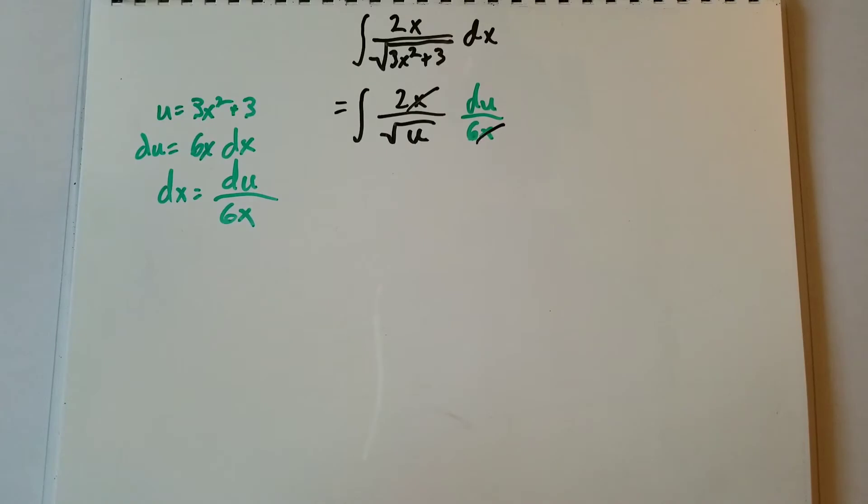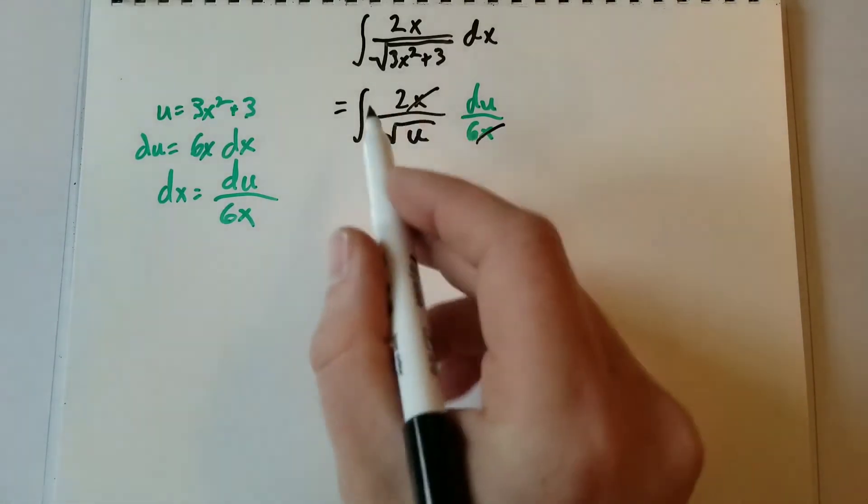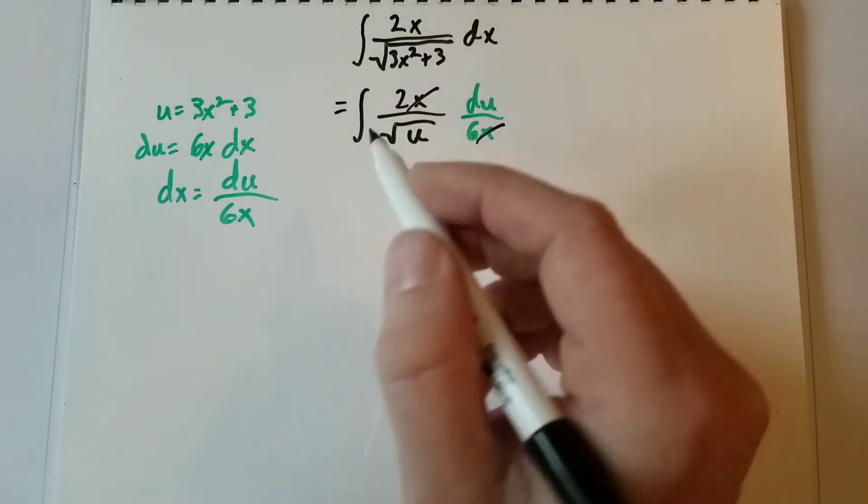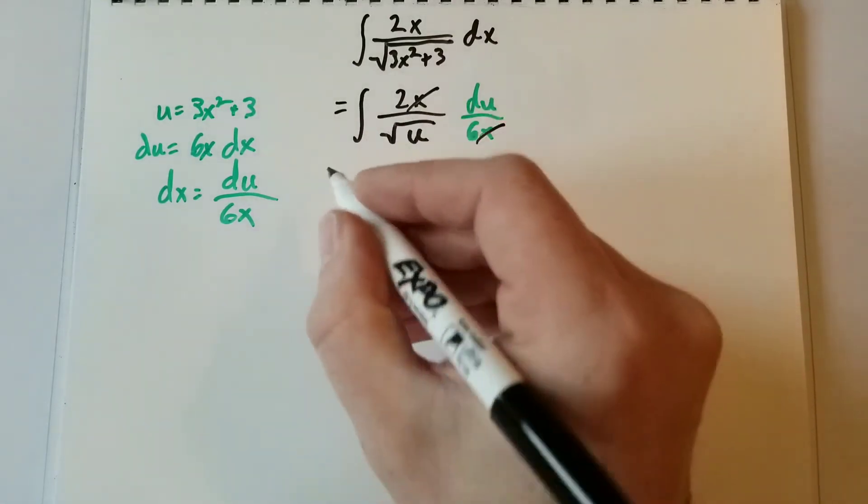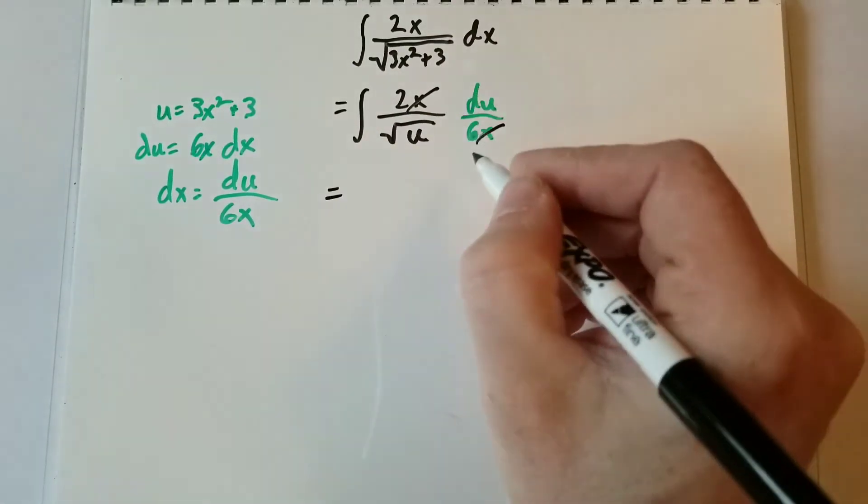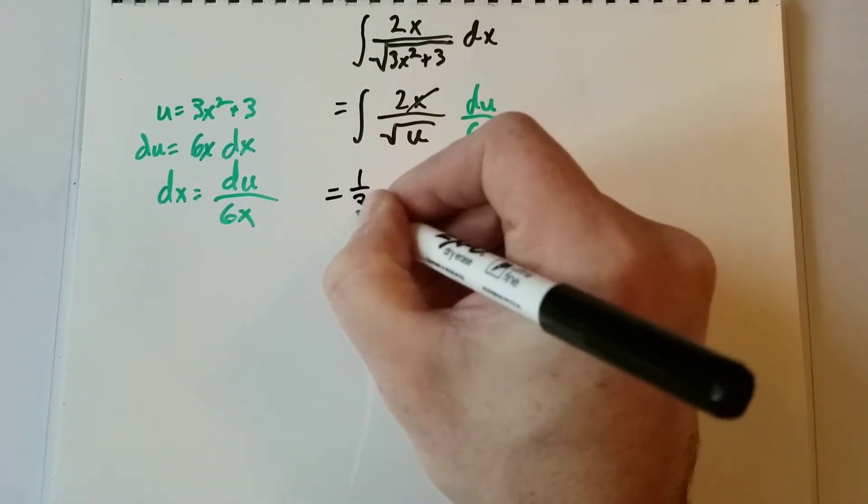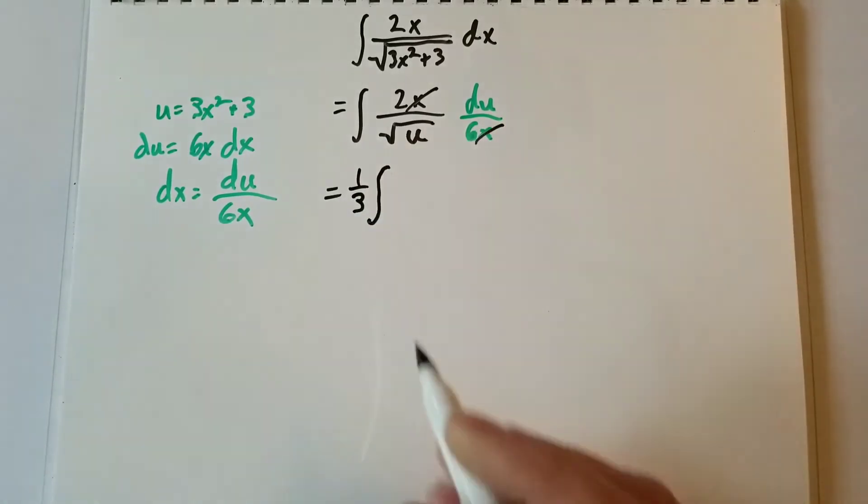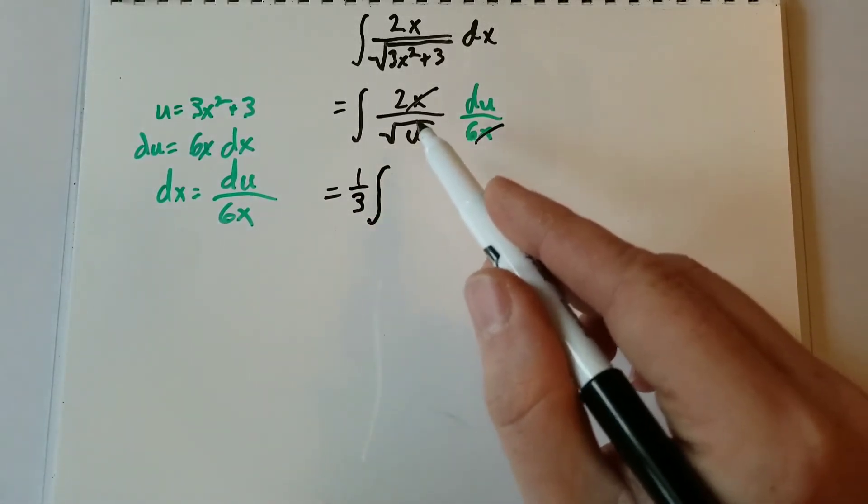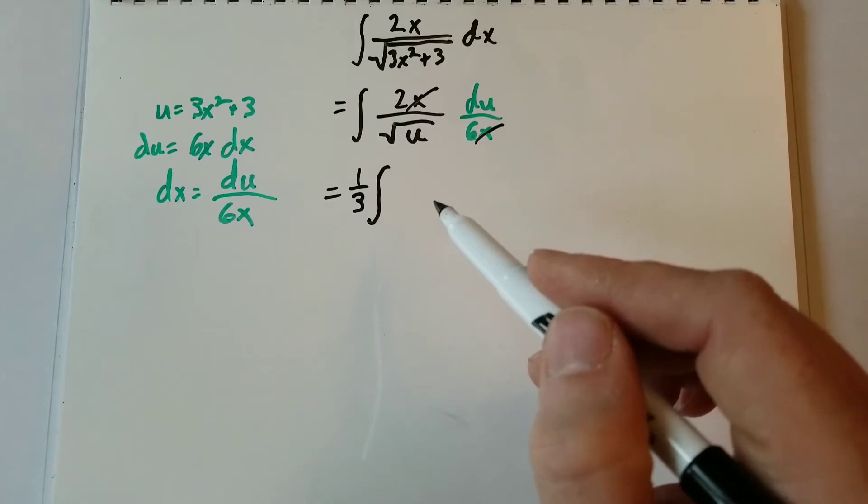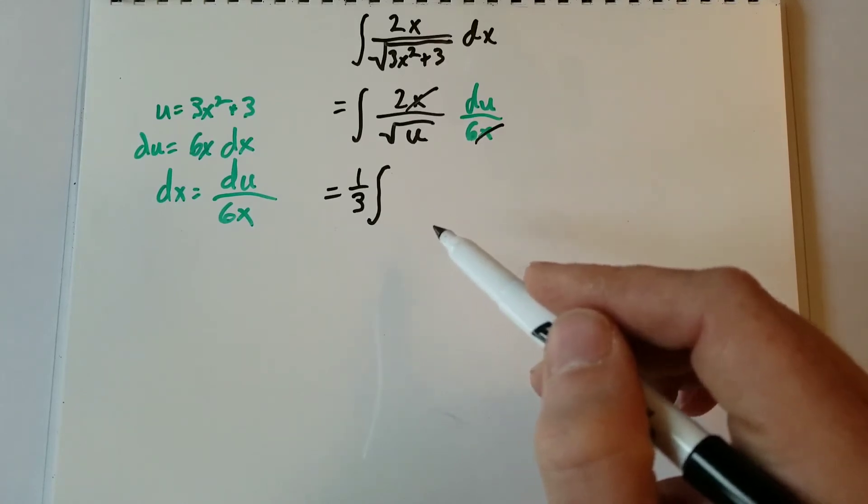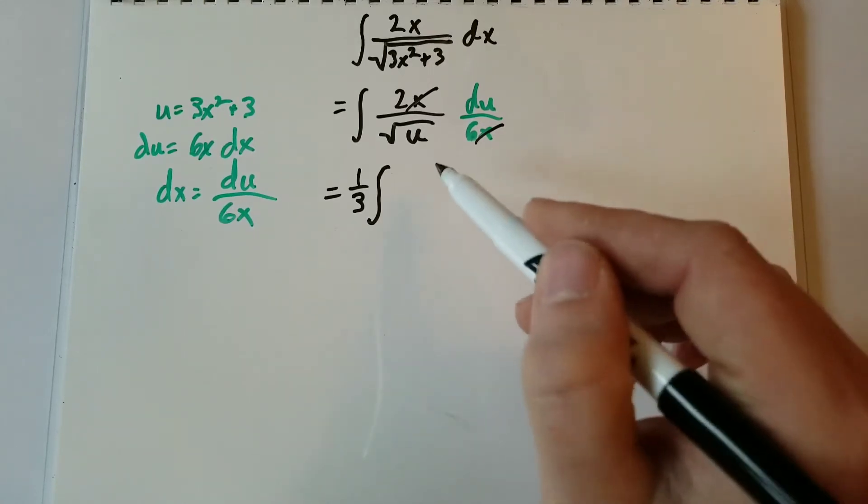And then at this point, we can also pull out our 2 over 6 out front and reduce it at the same time. So we've got 2 over 6 becomes 1 third. Then we have the integral, which is going to be 1 over the square root of u. So let's move that square root of u to the numerator.